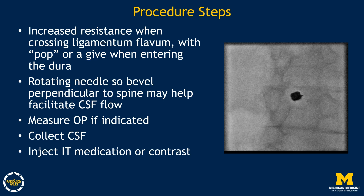At this point, the stylet can be removed to check for CSF flow. If present, the needle should be rotated so that the bevel is perpendicular to the spine, as this may facilitate CSF flow. At this point, opening pressure can be measured, CSF collected, and medication or contrast injected.